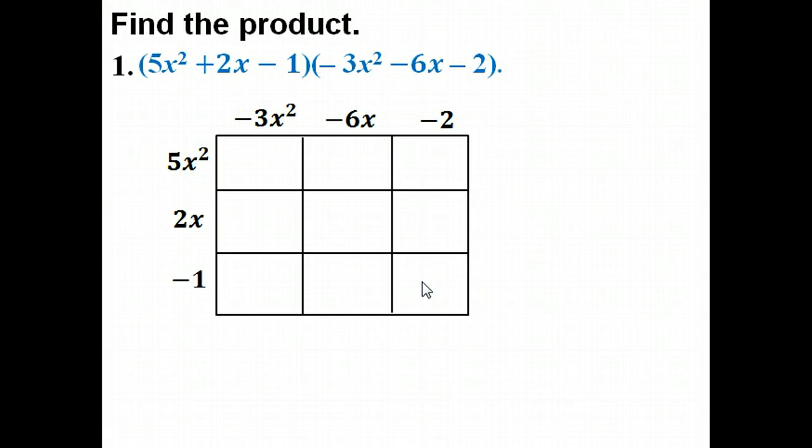Now that we've got this all filled out, it's a multiplication box and essentially what we're going to do is take and multiply each part here. So I've got negative 3x squared times 5x squared, that would give me negative 15x to the fourth. Negative 3x squared times 2x would yield me negative 6x cubed. Negative 3x squared times negative 1 would give me a positive 3x squared.